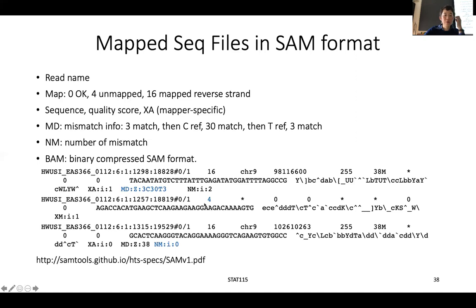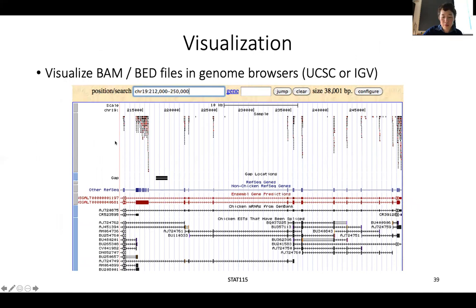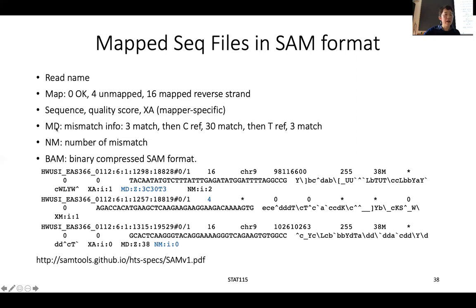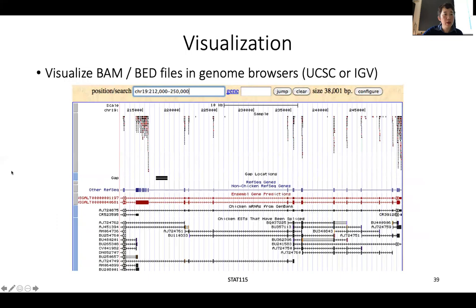Some reads will be unmappable, meaning no genomic location was found. The SAM file just contains rows and rows of these alignment entries, telling you whether a location was found, multiple locations, or none. The SAM file can also be compressed into a binary format called a BAM file, which retains essentially all the information from your original FASTQ and can be used by computational algorithms.